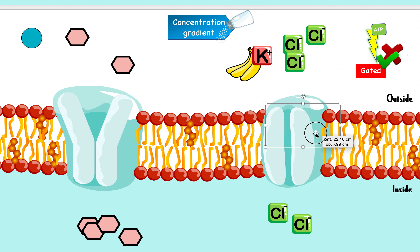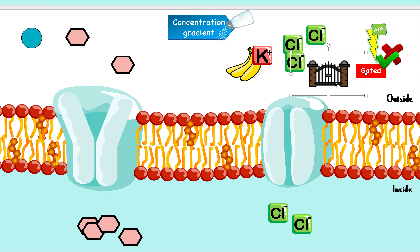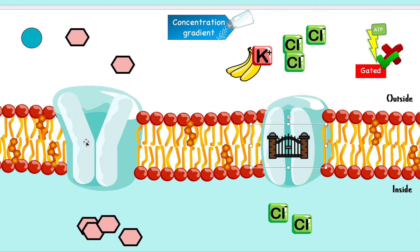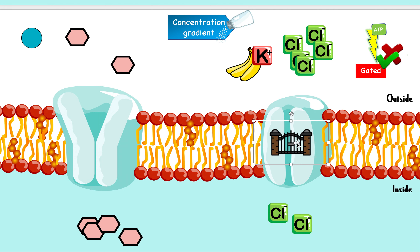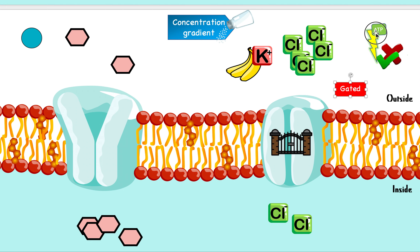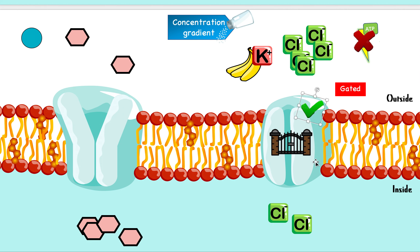Oftentimes, this channel protein may be gated. This means even though there's a big concentration difference between the outside and the inside, molecules cannot travel through because the gate is closed. This gate will open when the time is right. So it's important to note that these proteins can sometimes be gated — meaning closed temporarily. Also, just like simple diffusion, this process does not need ATP. No energy is required. The diffusion happens by itself naturally, but we do need these proteins — unlike simple diffusion.